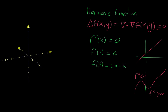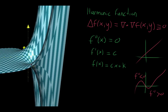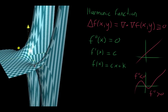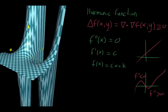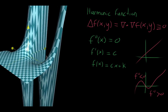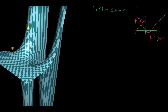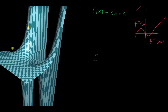But once we extend this to the idea of a multivariable function, things can get a lot more interesting than just a straight line. I've got the graph here of a multivariable function that happens to be harmonic. This is the graph of a two-variable function, and the function specifically is f(x, y) = e^x multiplied by sine of y.